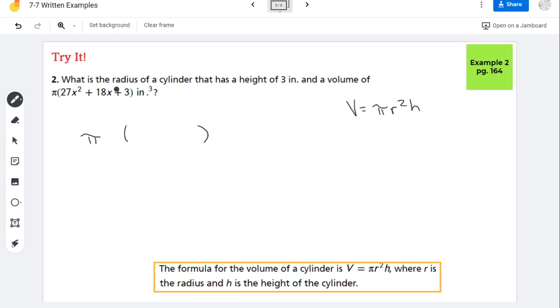So 27, 18, and 3, those are all divisible by 3. And if I do that, this is my trinomial that's left.